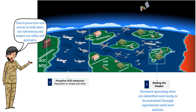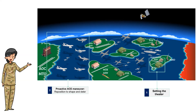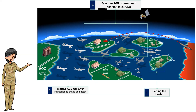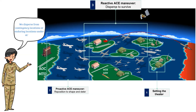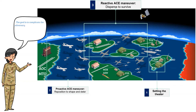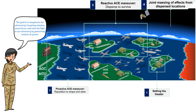As our scenario progresses into armed conflict, certain threats have triggered us into reactive ACE in phase three. In order to survive and then regenerate, we disperse from our contingency or enduring locations that are under attack. The goal of ACE is to complicate the adversary's targeting solution and, at the same time, mass forces from the dispersed locations to take the fight to our adversary.